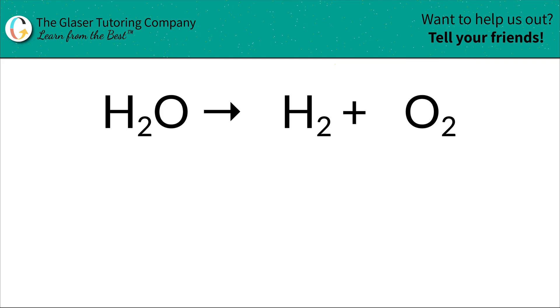Howdy partner, Andrew here from GlazerTutoring.com. Today I'd like to teach you how to balance water yields hydrogen plus oxygen. First step: locate that yield sign and draw a vertical line straight down. That will help us differentiate the left-hand side from the right-hand side. Next step is to place in these lines that will represent the locations of the coefficients.